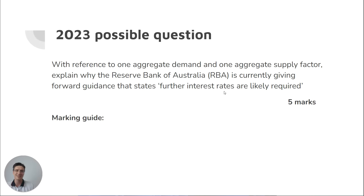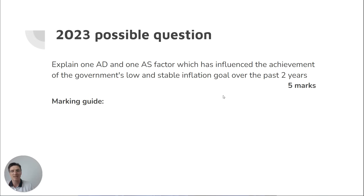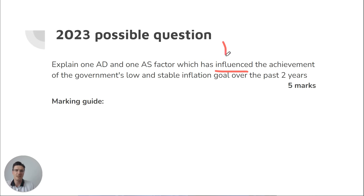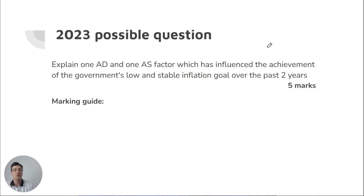A simpler way of asking that would be: explain one AD and one AS factor which has influenced the achievement of the government's goal of low and stable inflation. Because it says 'has influenced,' you could say a decrease in consumer confidence has put downward pressure on AD, and that would have put downward pressure on prices. So it has influenced inflation to decrease. You don't have to justify the current inflation rate — you just have to say what could be influencing prices.